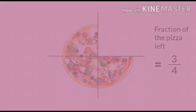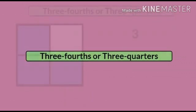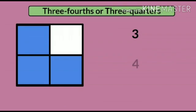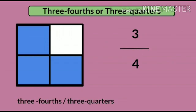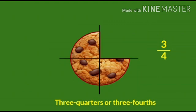Now, let us learn about three fourths or three quarters. Three pieces out of four equal pieces is called three fourths or three quarters. For example, look at this biscuit. If you eat one by four of the biscuit, three out of four parts are left. These three parts make three quarters or three fourths of the biscuit. Here, three is the numerator and four is the denominator.